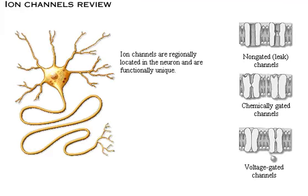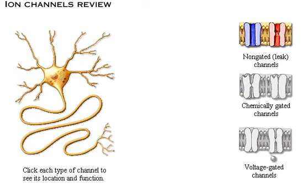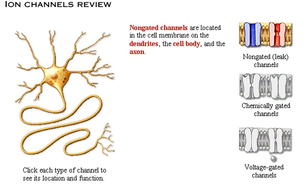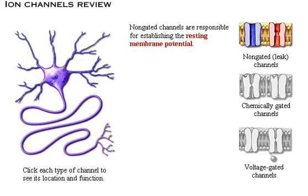Ion channels are regionally located in the neuron and are functionally unique. Click each type of channel to see its location and function. Non-gated channels are located in the cell membranes on the dendrites, the cell body, and the axon. Non-gated channels are responsible for establishing the resting membrane potential.